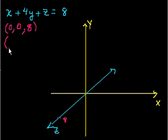Now what is the y-intercept? That's when x is 0 and z is 0. So if this is 0, this is 0, what's y? 4y is equal to 8, so y would be equal to 2. That would be right here. That's (0, 2, 0).